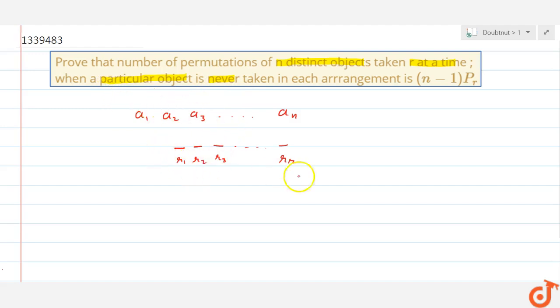A particular object always needs to never come in this arrangement. We believe that particular object is a2. So a2 never has to come in our arrangement.